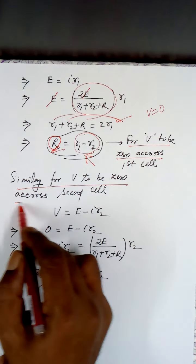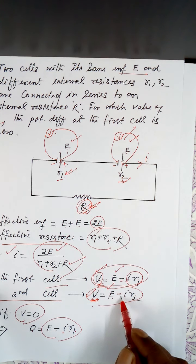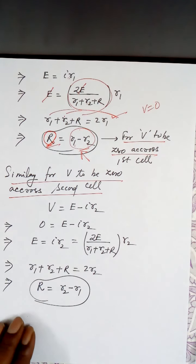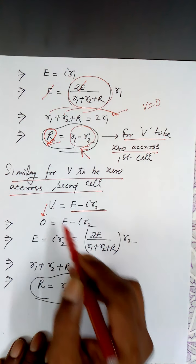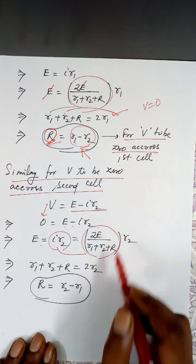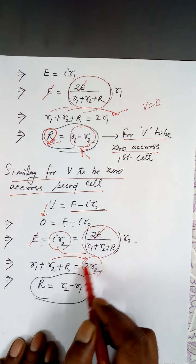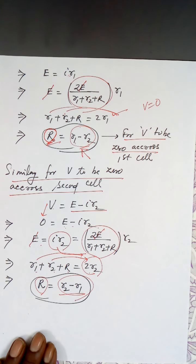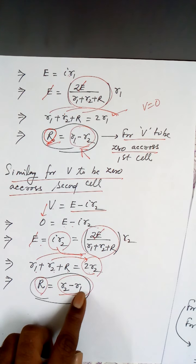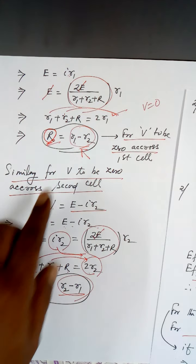Similarly, for V to be zero across the second cell — this was not asked in the question, but as an extra: V equals E minus I times R2. If V equals zero, then E equals I times R2. Substituting the value of I and cancelling E, cross multiplying gives R1 plus R2 plus R equals 2R2. Bringing R2 to one side and R1 to the other, capital R equals R2 minus R1. So for the second cell's terminal voltage to be zero, the external resistance R should equal R2 minus R1.